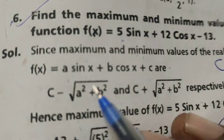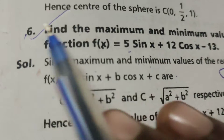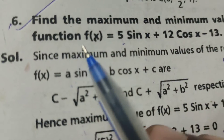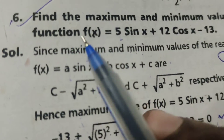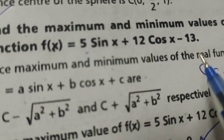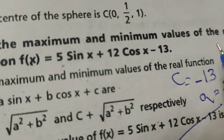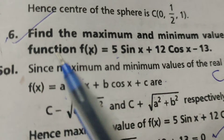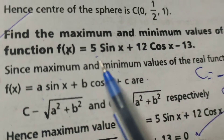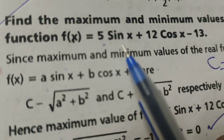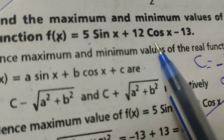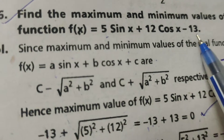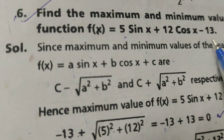Hi everyone, this is Dr. Yuthi. Today we are going to discuss finding the maximum and minimum values of the real function f(x) equals 5 sin x plus 12 cos x minus 13.